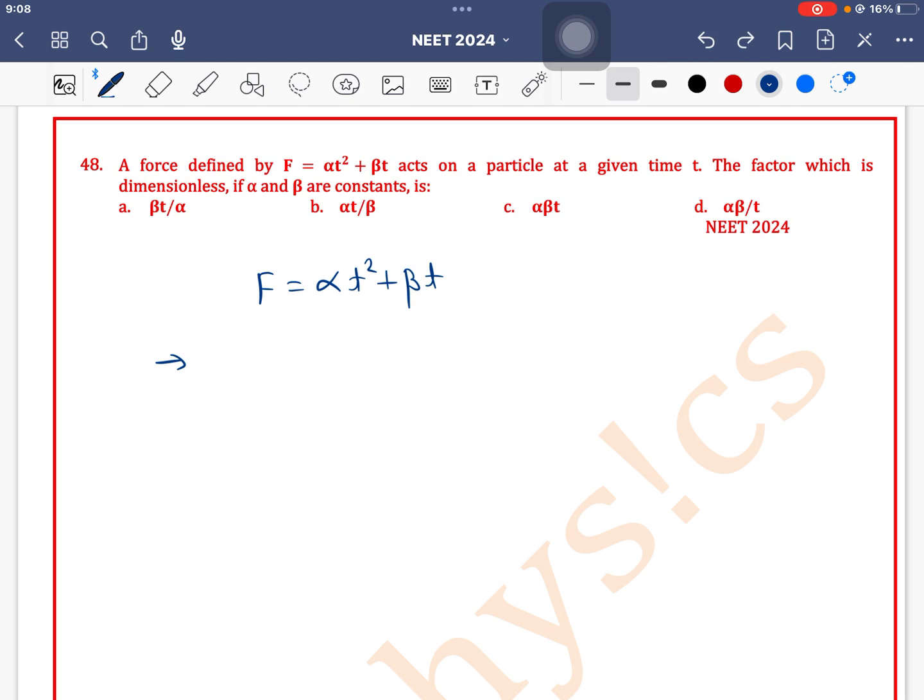We know that as the equation is dimensionally correct, the dimension of each term must be equal. So dimension of alpha t squared must equal the dimension of force. Dimension of alpha times t squared equals dimension of force. Since force is m¹l¹t⁻², and t squared has dimension t², the dimension of alpha is m¹l¹t⁻⁴.